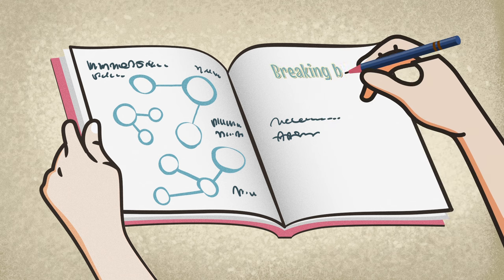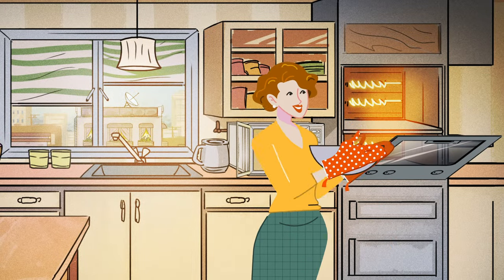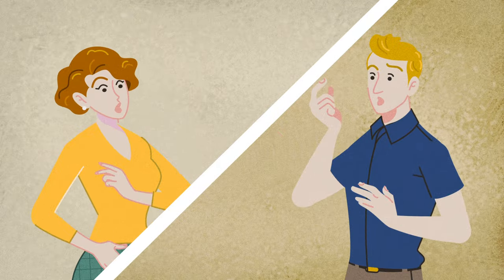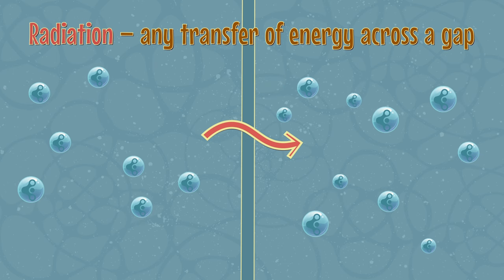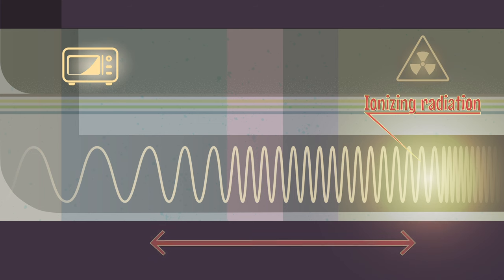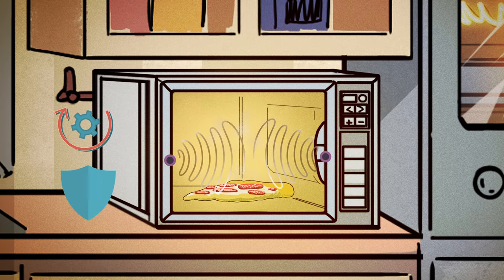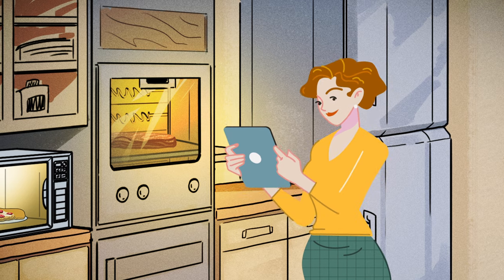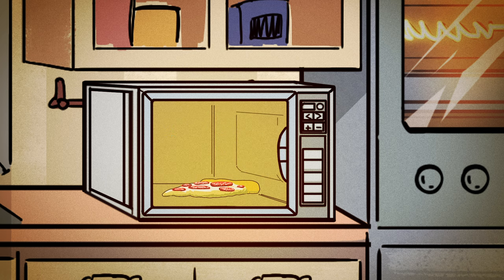Microwaves heat food molecules mechanically, through friction, but they don't alter them chemically. Soup heated in the microwave is molecularly indistinguishable from soup heated using a stove or oven. The term microwave radiation can be alarming, but in physics, radiation simply describes any transfer of energy across a gap. High-frequency, ionizing radiation may be harmful because it can strip electrons from molecules, including DNA. However, microwaves aren't energetic enough to alter chemical bonds, and microwave ovens are designed to prevent leakage for safety and efficiency's sake. Nonetheless, to totally limit exposure, experts recommend simply standing a few feet away when a microwave oven is on.